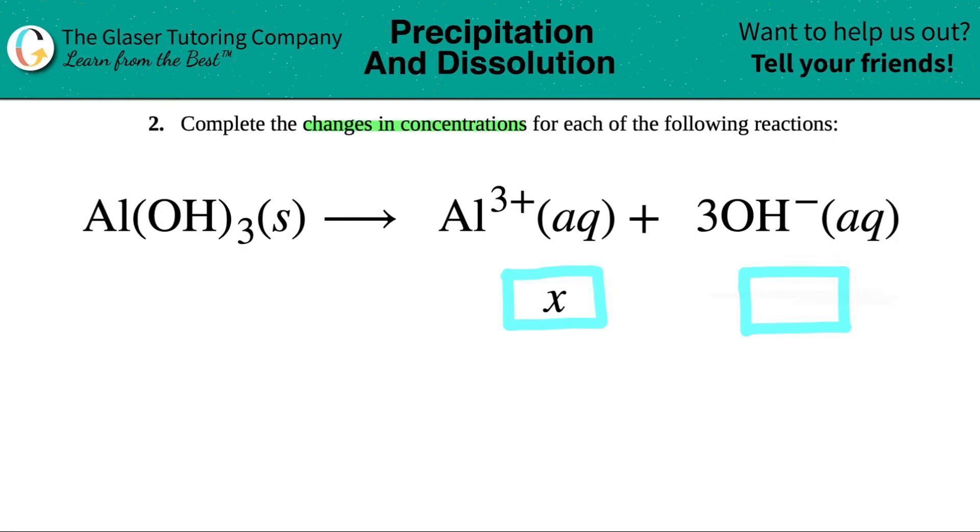Three OH⁻. Now the thing is they told us that the aluminum is already going to change by some concentration. We don't know what it is, so we're going to label it as x.